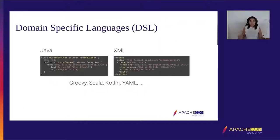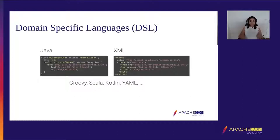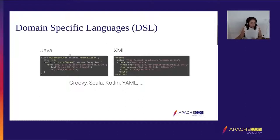Apache Camel has a very simple domain-specific language — a way of describing and coding the integration with Camel. Every integration in Camel is called a route. A route is basically consuming data from an endpoint, doing the work with the data, and then producing the data elsewhere. Here, for example, we have a route written in both Java and XML.